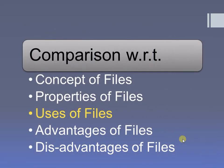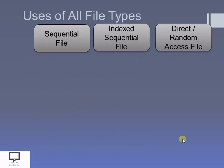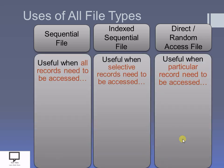Now let's look at the uses of these files. For sequential files, they are best when you need to access all records one by one in sequence. Index sequential files are most useful when accessing selective records and an index is available. Direct or random access files are ideal when you need to access a particular record and its address can be calculated using a mathematical formula.